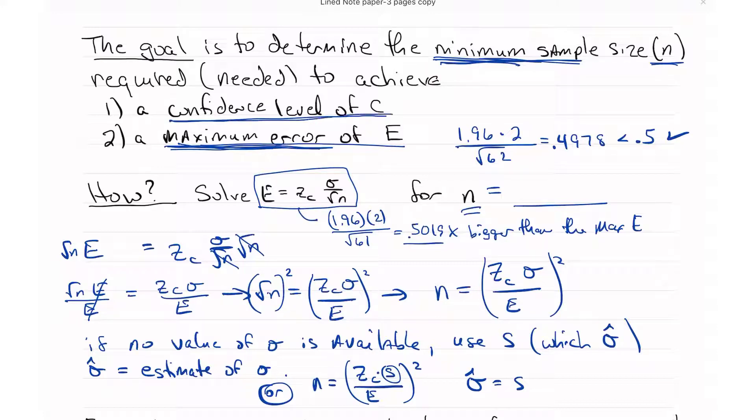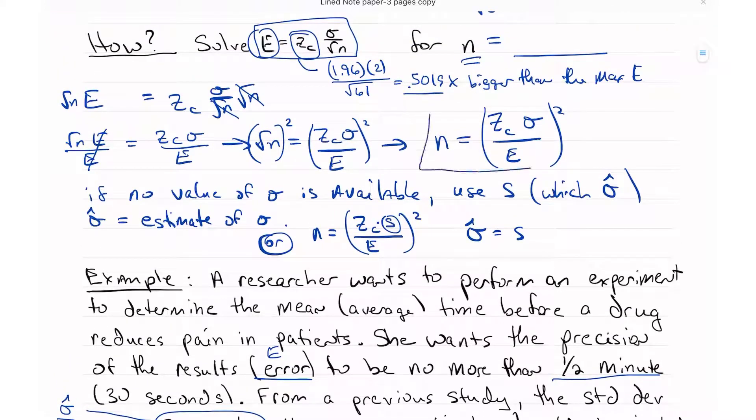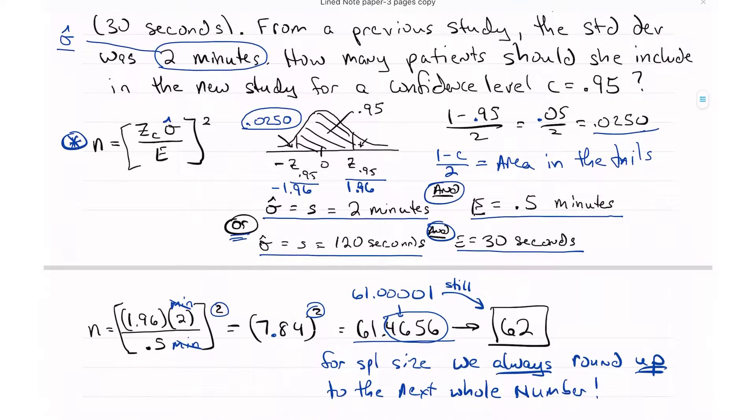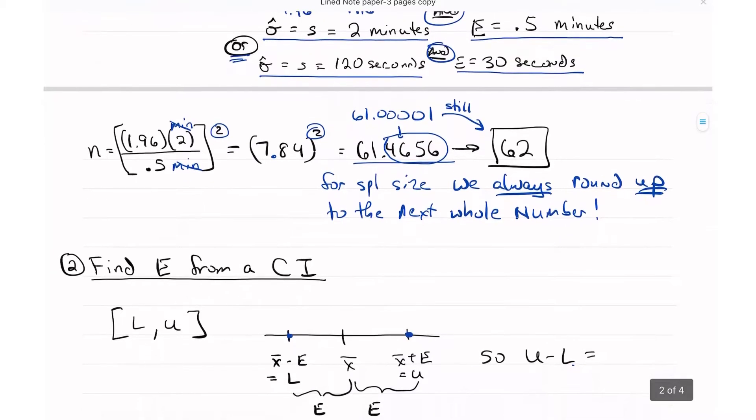Remember that I'm looking for the minimum sample size to achieve the confidence level I want. That confidence level is determined by Z sub C for the maximum amount of error that I'm willing to accept E. With this E, E takes care of the precision, Z sub C takes care of the confidence level. So we always round up.